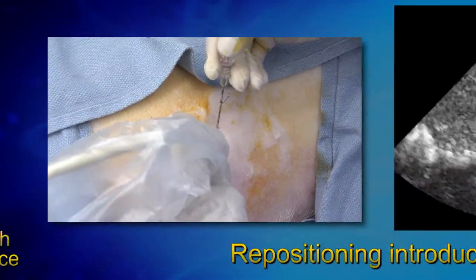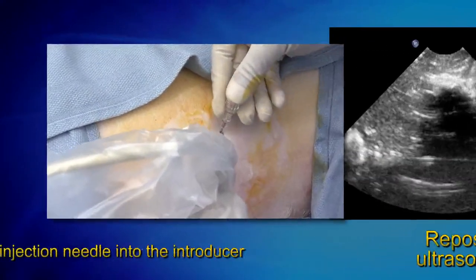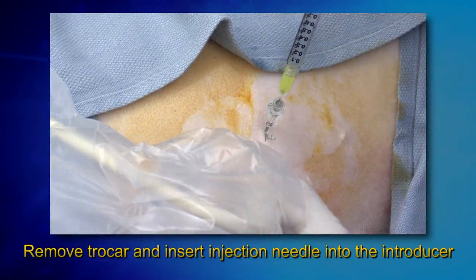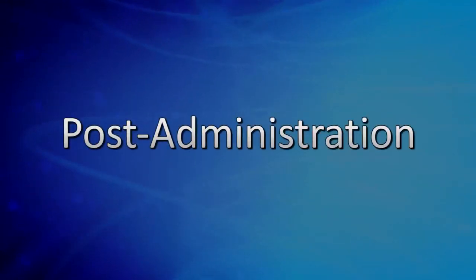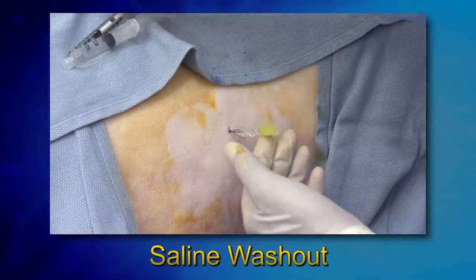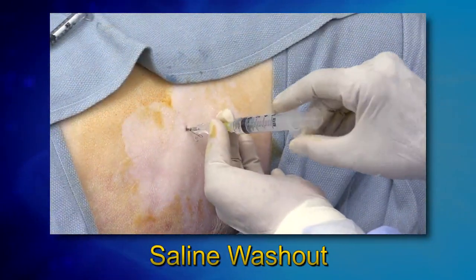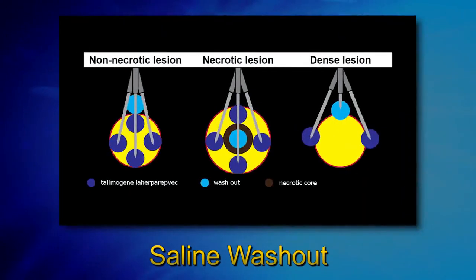Withdraw the Telimagine Leherperepvec injection needle and reinsert the trocar before repositioning the needle. Remove the trocar and insert the injection needle into the introducer as before for injection of Telimagine Leherperepvec. When the injection needle is in the appropriate position, attach a syringe with one milliliter of normal saline and wash out the injection needle. After Telimagine Leherperepvec administration is completed, the injection needle should receive a washout administered preferentially away from any prior site of administration, either into the necrotic core of lesions or just proximal to the lesion.